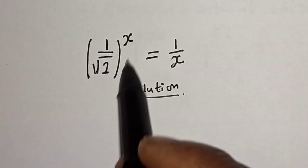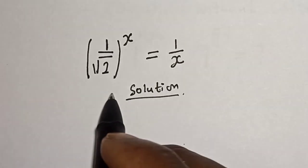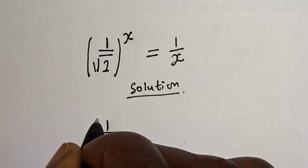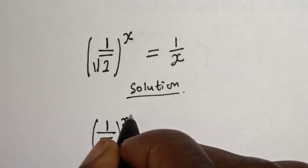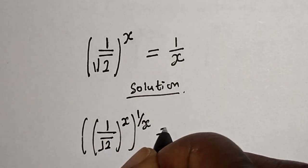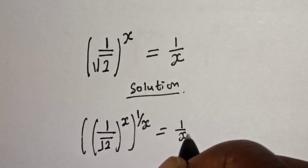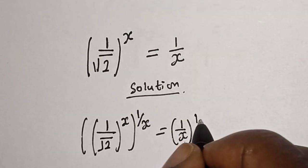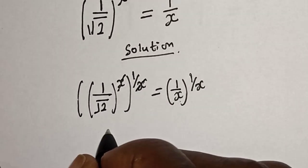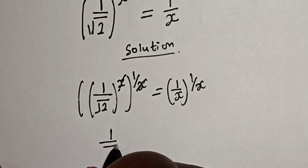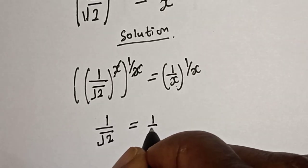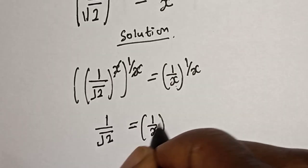In order to solve this, let's multiply the power of both sides by 1 over s. That is: 1 divided by square root of 2, all raised to power of s, raised to power of 1 over s, is equal to 1 over s raised to power of 1 over s. From here, this s and this s cancel, giving us 1 over square root of 2 is equal to 1 over s raised to power of 1 over s.